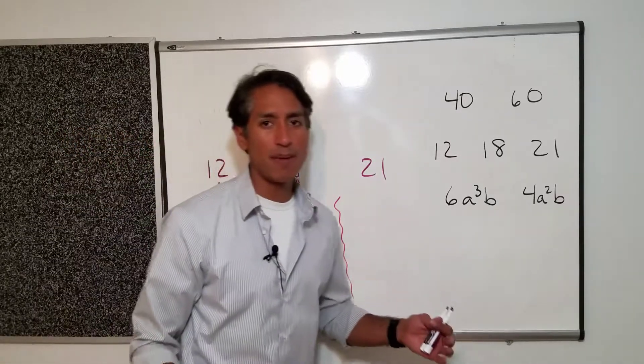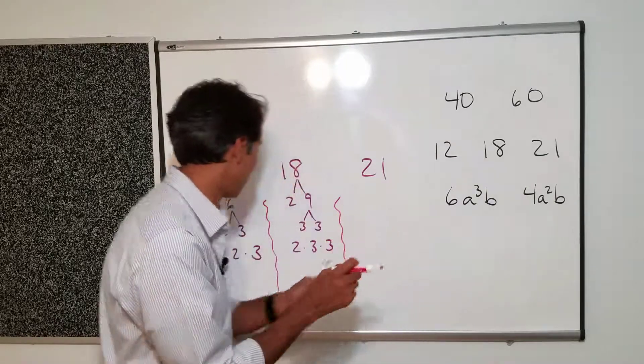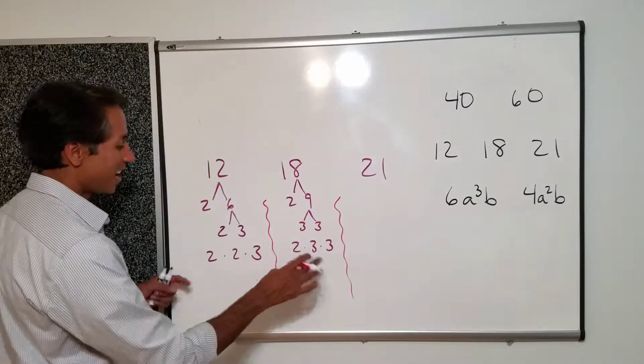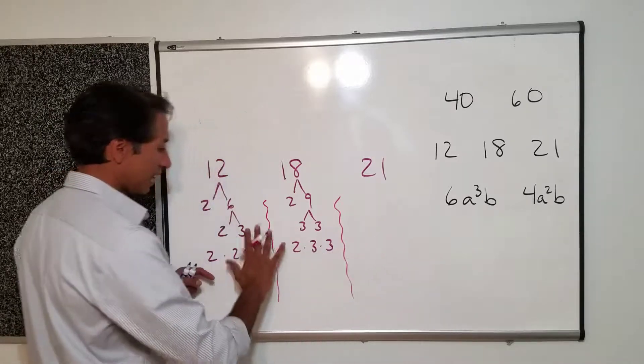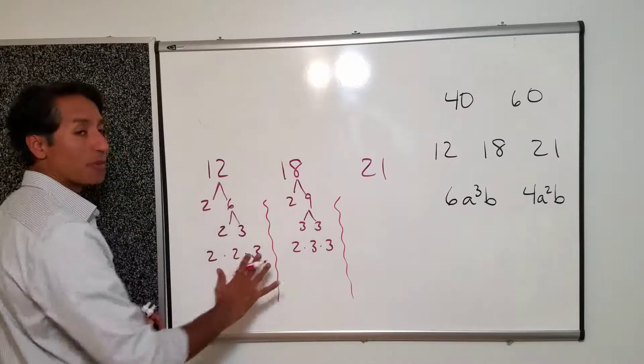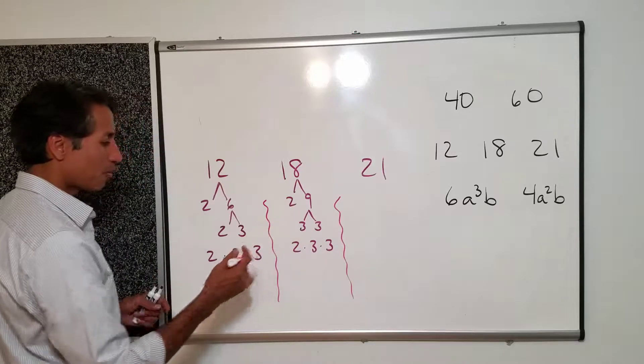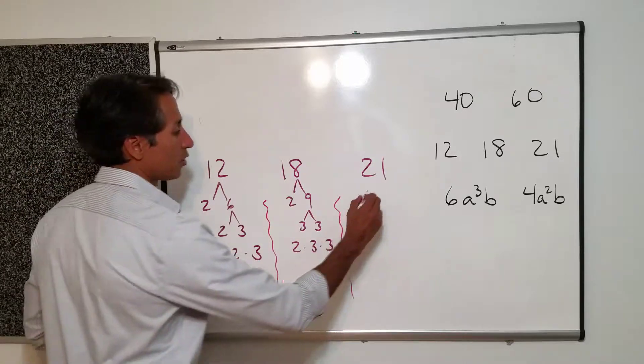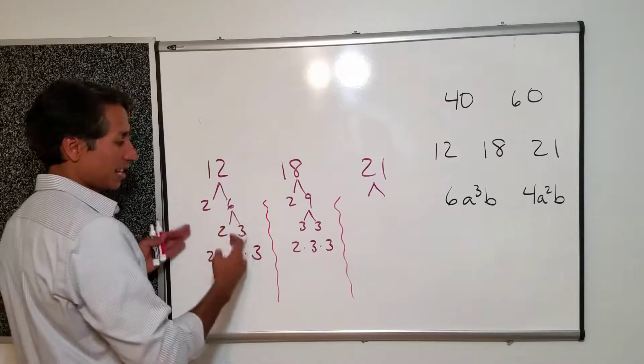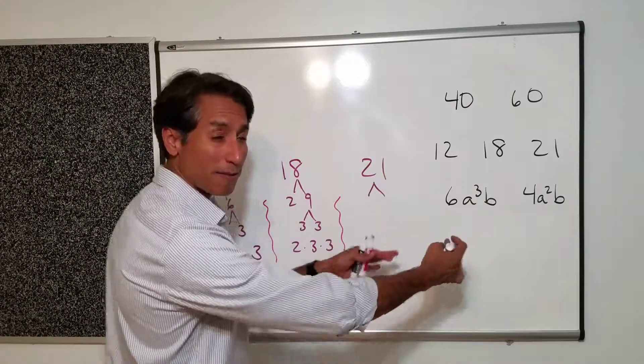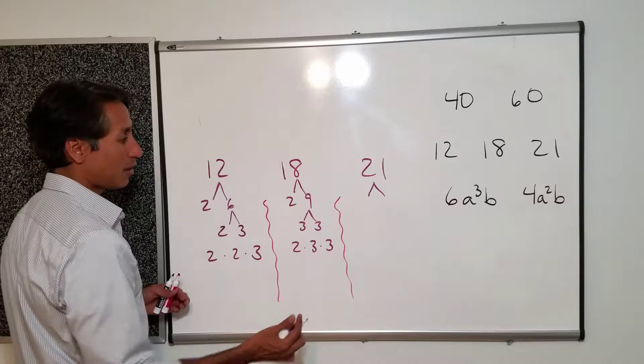Sometimes when the numbers get kind of big. I see students and they're writing all of these. They write these so close together that they lose track of like what came from what. And they start making up their own factor numbers and stuff. So be careful. If you need to make some wiggly lines between them or just kind of space these out a little bit further. Then that's what I would do.